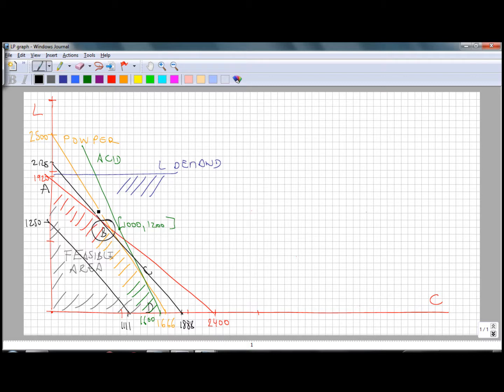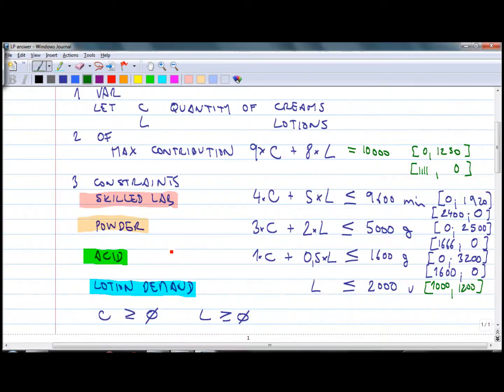That is the optimum solution. How do we find point B? It is the intercept of this orange line which is a constraint for powder and this red line which is a constraint for labor. If we go back to our constraints definition, we can find the point by looking at these two constraints.